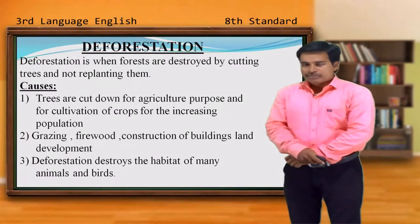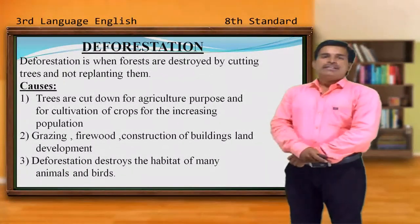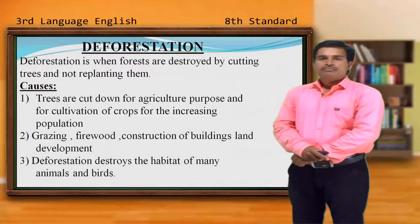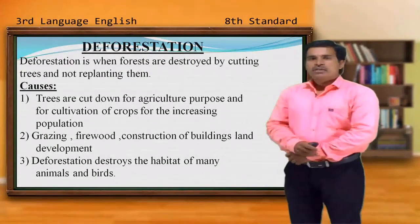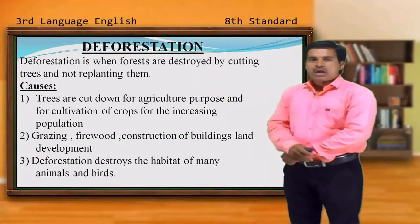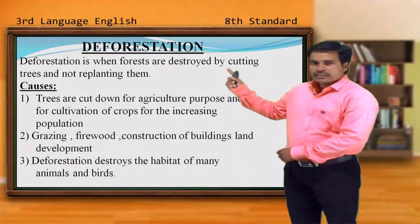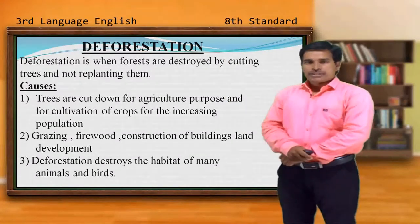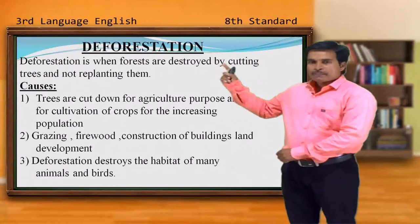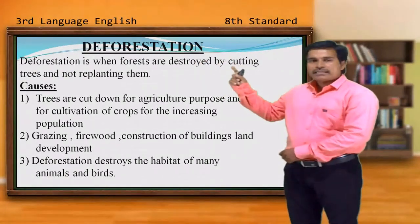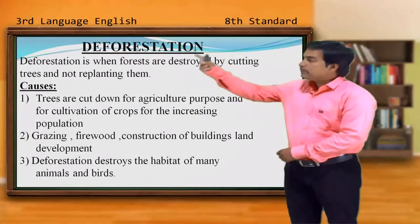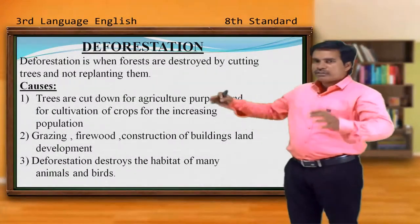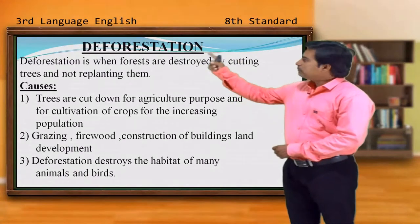Now I request you to open your textbook, page number 8. There is a pre-reading activity, and in that one the first word itself is about deforestation. Now it is a question for you to understand what exactly the word deforestation is all about. Deforestation means when forests are destroyed by cutting trees and not replanting them. Those last three words are very important — we are cutting down the trees and destroying the forest, but we are not replanting them.